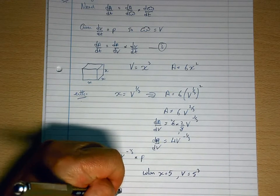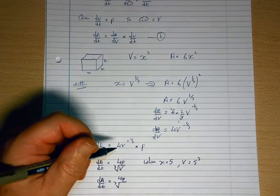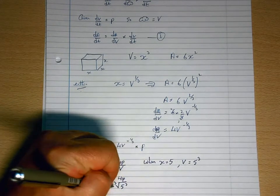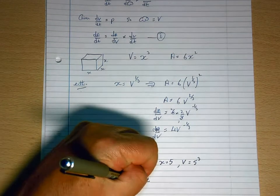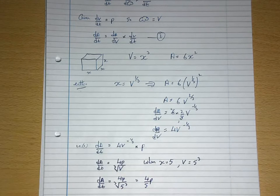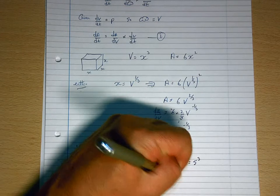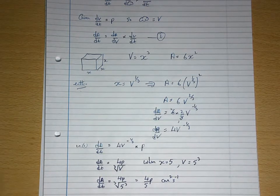will be 4p over the cube root of V, which is 5 cubed. So the cube and the cube root would undo each other, and you're left with 4/5 p centimeters squared per second. So that's one way of doing it.